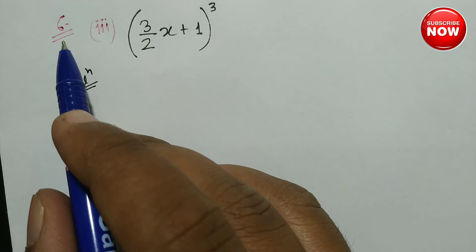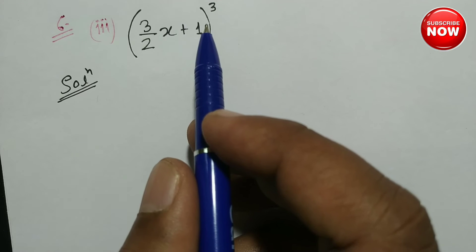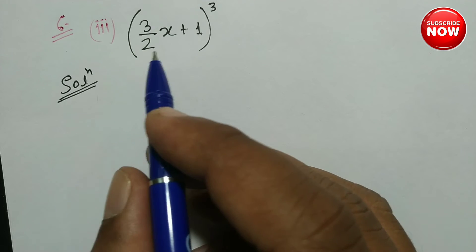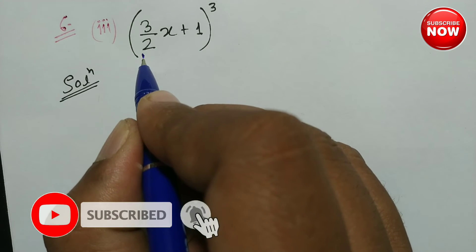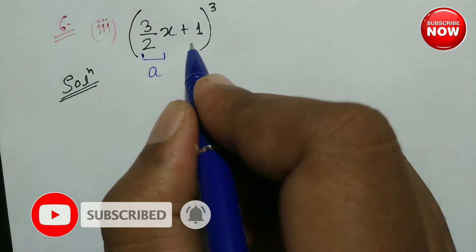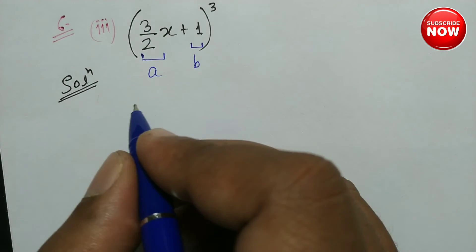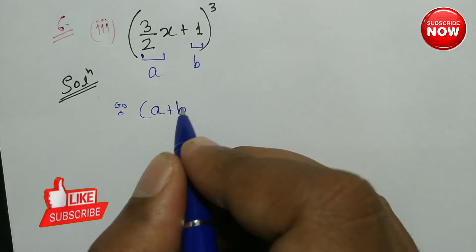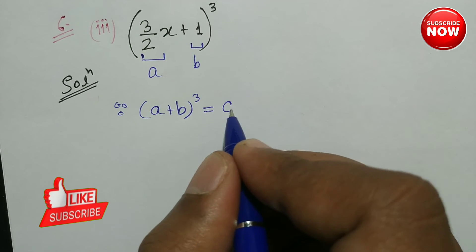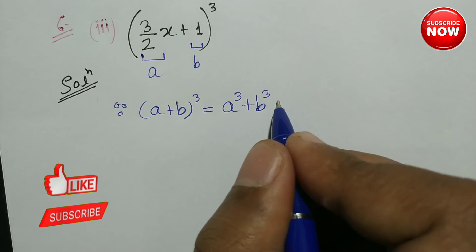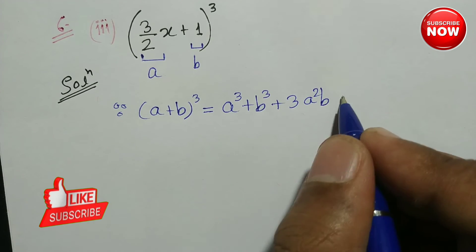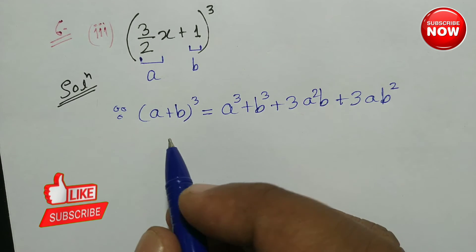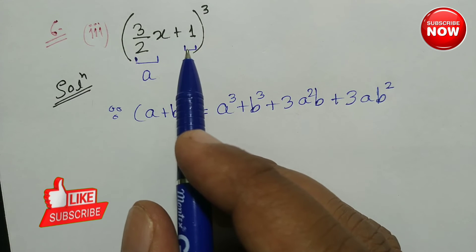Now we do the third part of question number 6: (3/2x + 1) whole cube. We have to find the expansion of (3/2x + 1) whole cube. यहाँ a = 3/2x है और b = 1 है, बीच में plus का sign है, और whole cube की power लगी हुई है। इसका मतलब यह a plus b whole cube के form में है। a plus b whole cube = a cube + b cube + 3a square b + 3ab square.